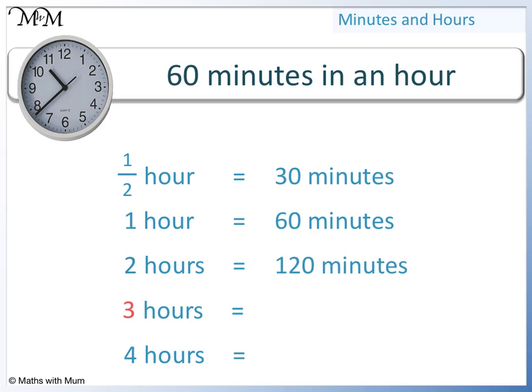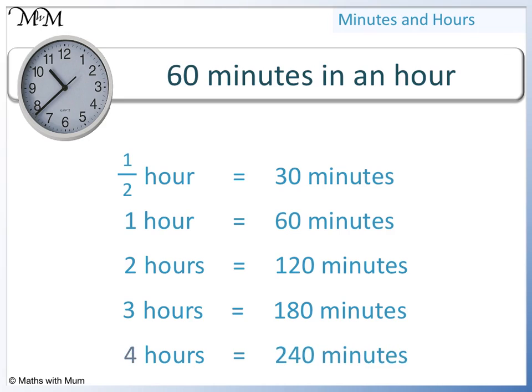For 3 hours, we multiply 60 by 3. 6 times 3 equals 18, so 60 times 3 equals 180 minutes. For 4 hours, we multiply 60 by 4. 6 times 4 equals 24, so 60 times 4 equals 240 minutes.